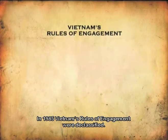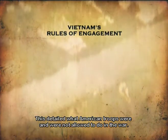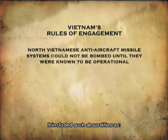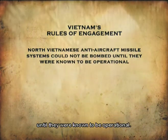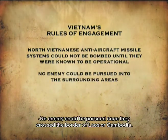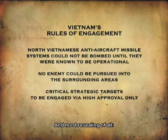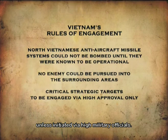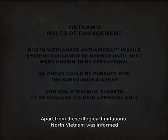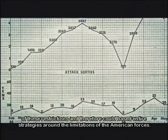In 1985, Vietnam's rules of engagement were declassified, detailing what American troops were and were not allowed to do in the war. It included such absurdities as: North Vietnamese anti-aircraft missile systems could not be bombed until they were known to be operational; no enemy could be pursued once they crossed the border of Laos or Cambodia; and the most critical strategic targets were not allowed to be attacked unless initiated via high military officials. North Vietnam was informed of these restrictions and therefore could base entire strategies around the limitations of the American forces.